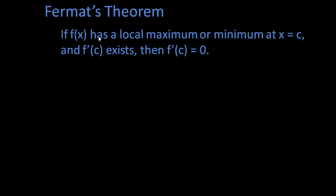So Fermat's theorem states that if f of x has a local max or a local min at x equals c and the derivative exists, then the slope has to be zero, f prime of c is zero.